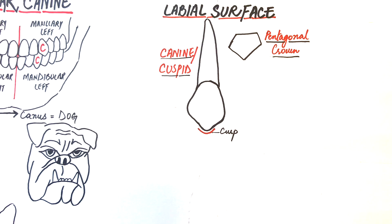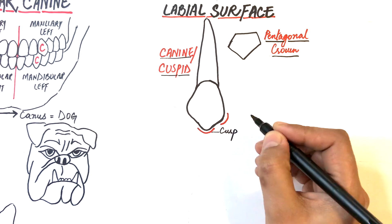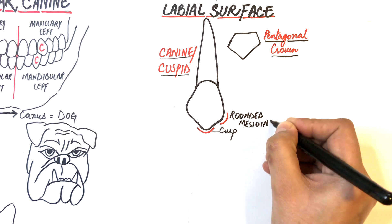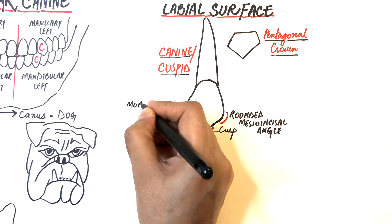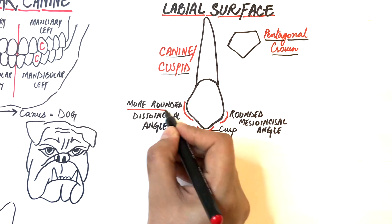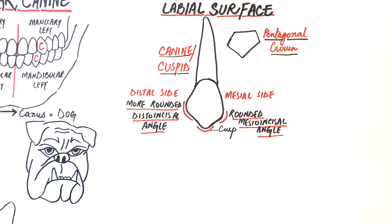From the mesial and distal margins of the labial surface, the tooth is convex and has a rounded mesoincisal and an even more rounded distoincisal angle. The distal margin is shorter than the mesial margin.